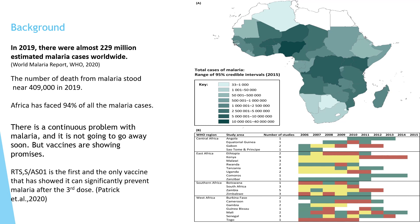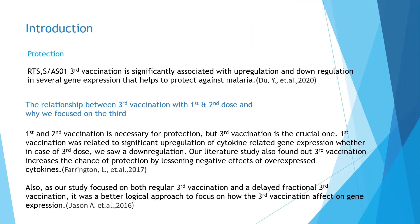Malaria vaccine development entered a new milestone in 2015 as RTS,S became the very first human anti-parasite vaccine to pass regulatory examination. It has significantly shown that it can prevent malaria. You must be thinking about two things: one, how does this vaccine protect us from malaria, and secondly, why are we mainly focusing on the third dose? This vaccine facilitates several gene expressions associated with protection and also reduces the pathogenicity of malaria — this is how it helps in protection.